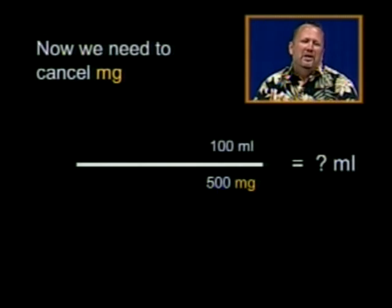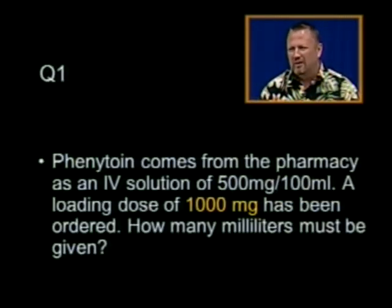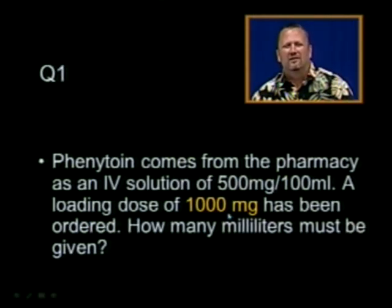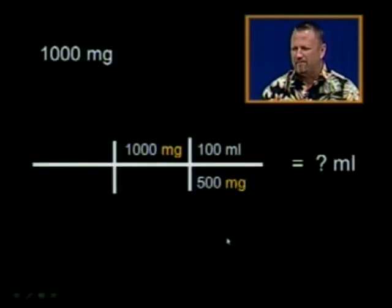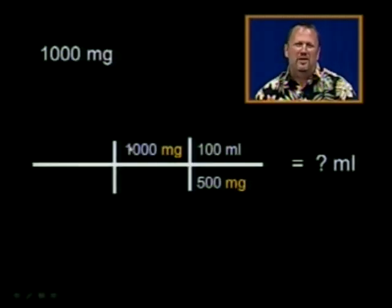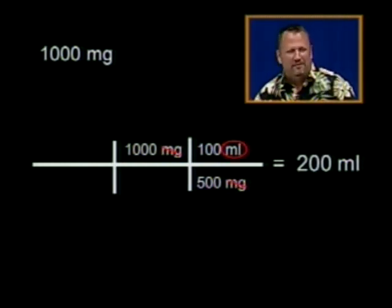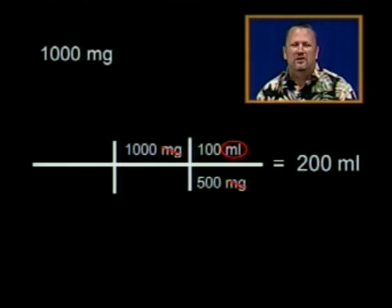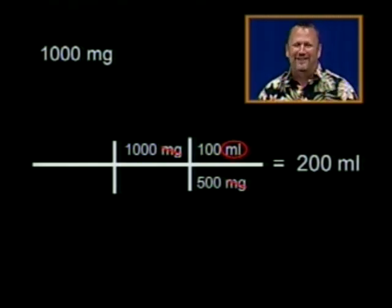Now we need to cancel milligrams. We'll look at the question and see 1,000 milligrams has been ordered. Take that 1,000 milligrams and put it in the numerator. Milligrams cancel out — milligram over milligram equals 1, and 1 times anything is a waste of time in this class. Notice that we're only left with the unit milliliters.